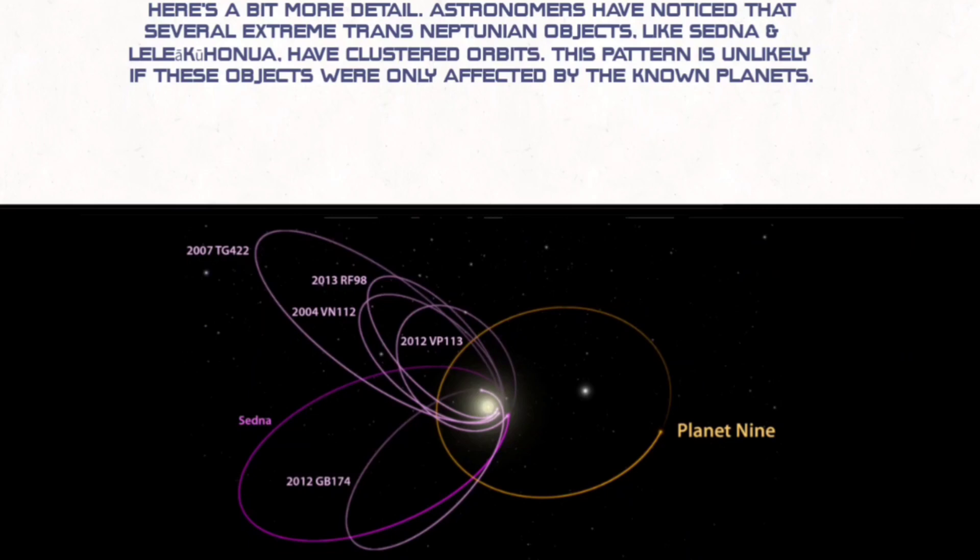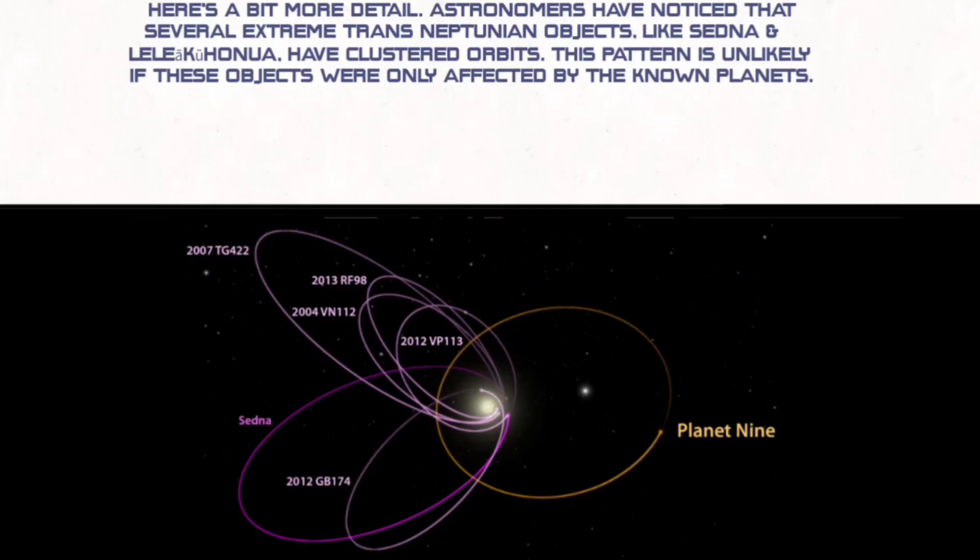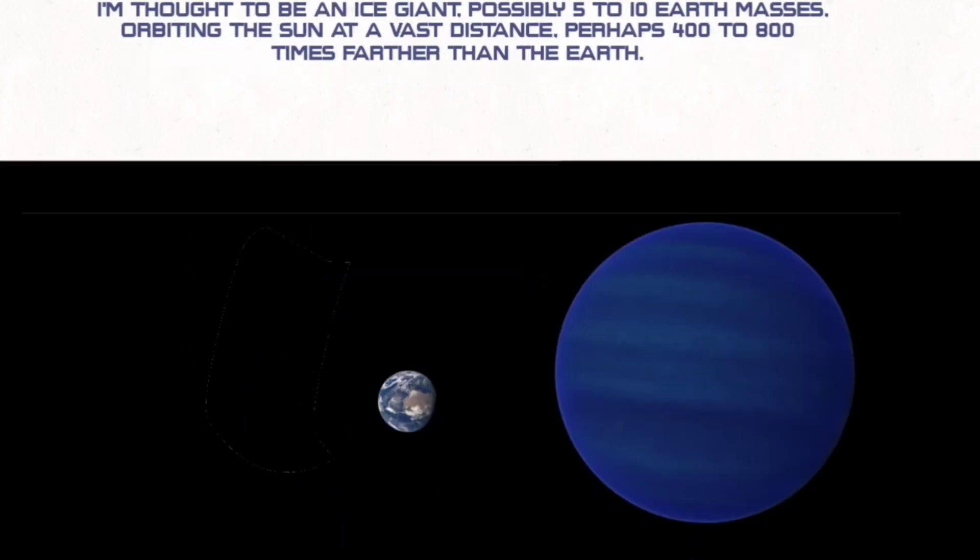Astronomers have noticed that several extreme trans-Neptunian objects like Sedna and Leleakuhonua have clustered orbits. This pattern is unlikely if these objects were only affected by the known planets. I'm thought to be an ice giant,